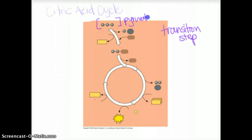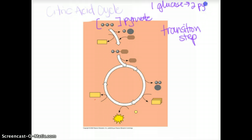And technically, for every glucose molecule, one glucose molecule yields two pyruvate. So, this would actually happen twice.